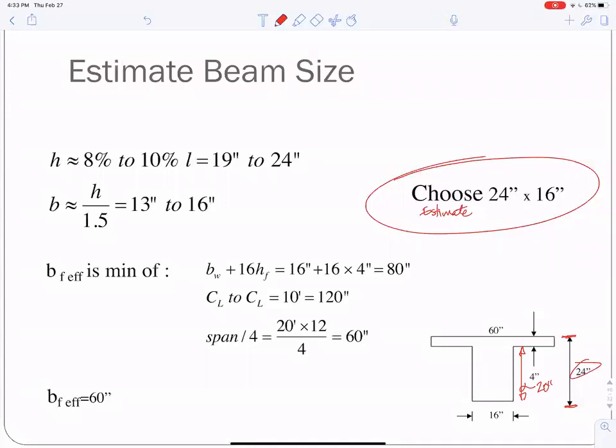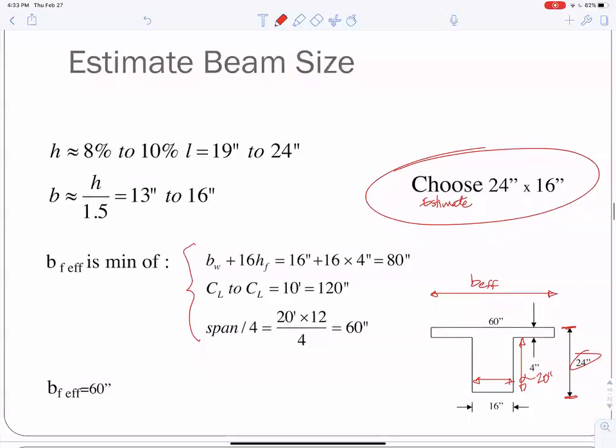Now B effective. How much of the slab are we going to count as part of the T-beam? The rule is the least of these three things. The web width, 16 inches, plus 16 times the thickness, that's HF, plus 16 times that. That comes from 8 HF on both sides. Center line to center line, this is the tributary width. These beams are 10 feet apart, so 10 foot tributary width. And so 16 plus 16 slab thicknesses comes out to 80 inches. The tributary width was 120 inches.